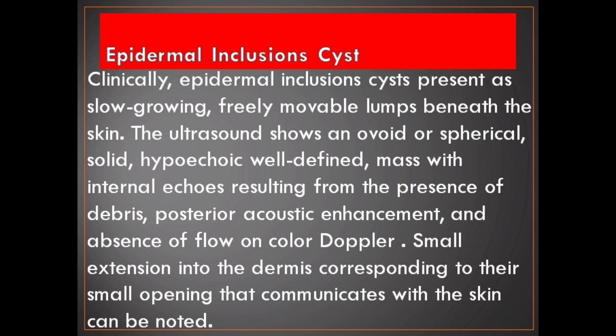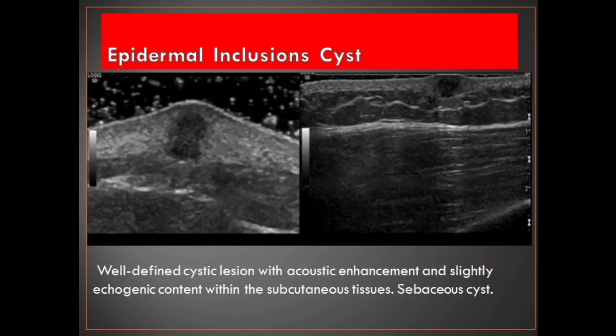On ultrasound, they show an ovoid or spherical, solid, hypoechoic, well-defined mass with internal echoes resulting from the presence of debris, posterior acoustic enhancement, and absence of flow on color Doppler. Small extension into the dermis corresponding to their small opening that communicates with the skin can be noted. Well-defined cystic lesion with acoustic enhancement and slightly echogenic content within the subcutaneous tissues — sebaceous cyst.